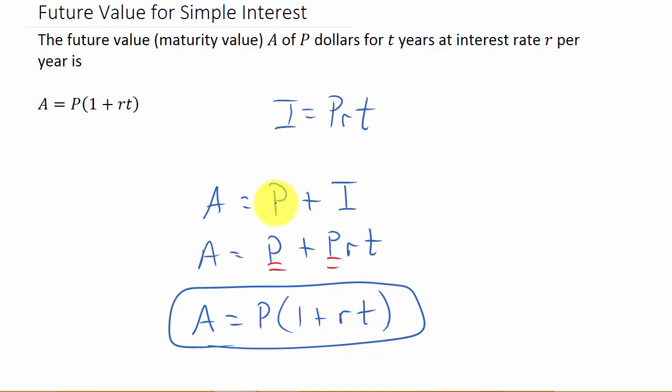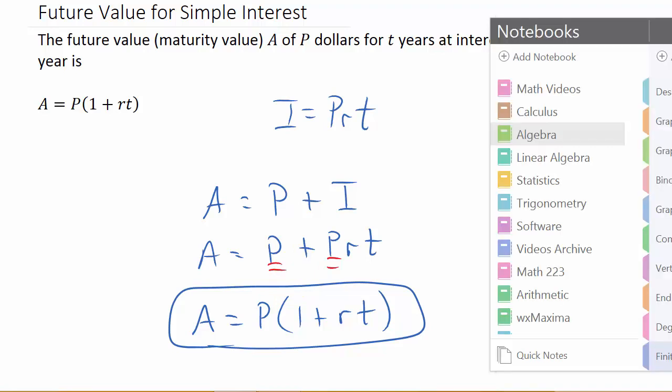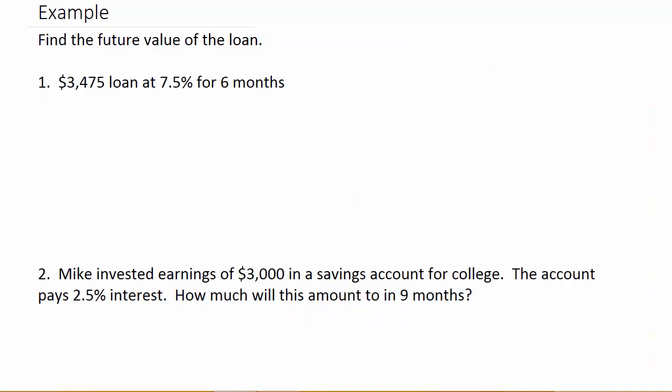So that's all it is, is the amount of money you borrow or invest or whatever, plus the interest added on to it. Alright, so let's look at an example.